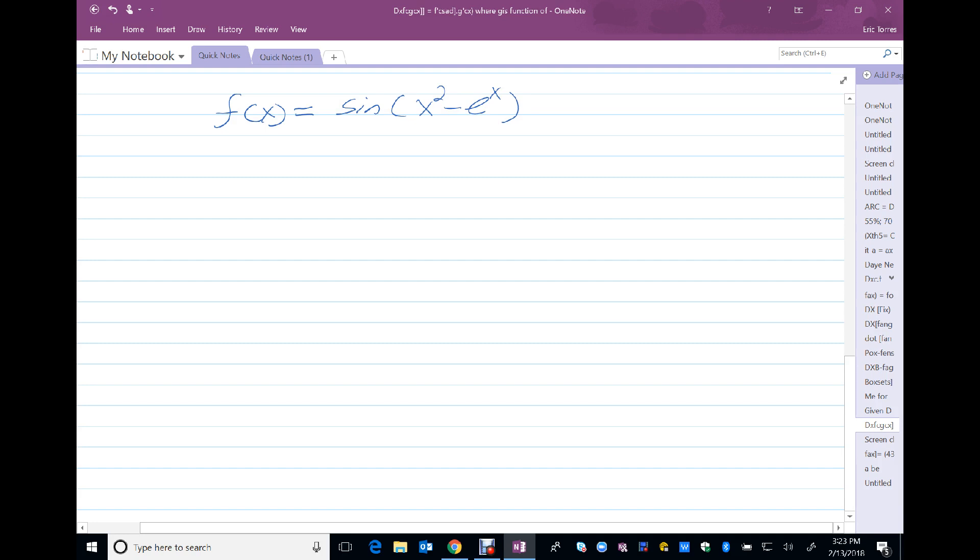Let's say we had something like sine of x squared minus e to the x. Okay, well, I can take the derivative of the sine, and that's a pretty good place to start, where I let u equal x squared minus e to the x. Then I have the sine of u.